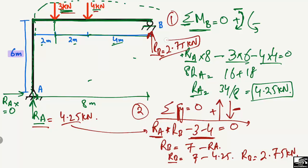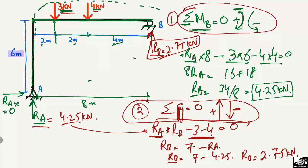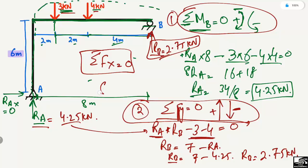This is how to find support reactions for a frame structure. Whether you have concentrated loads or uniformly distributed loads, you can use these equilibrium equations with appropriate sign assumptions. If there is a horizontal load, also consider summation of horizontal forces equals zero to find the horizontal reaction. Hope you understood — don't forget to subscribe for more civil engineering videos. Thank you for watching.